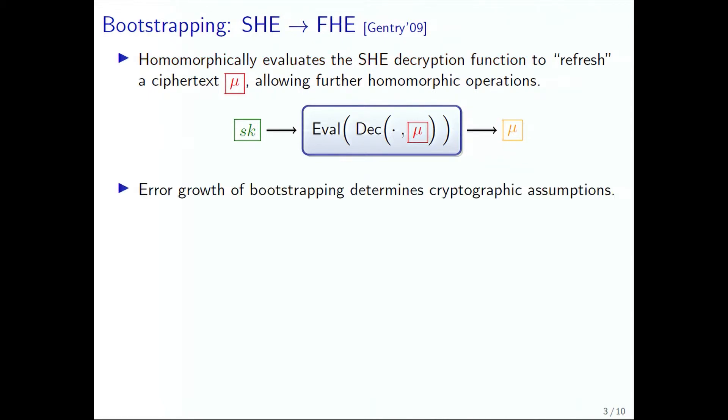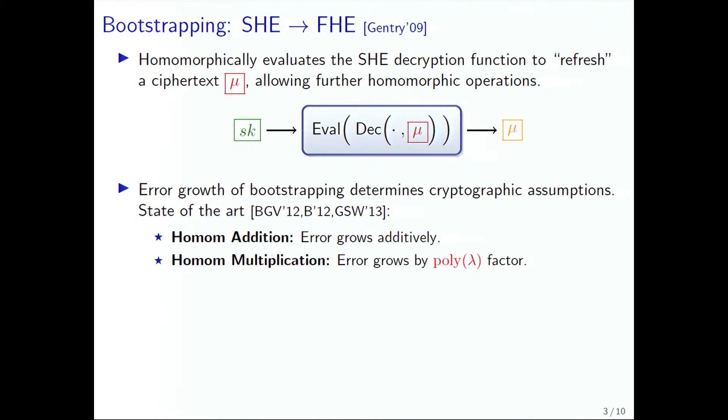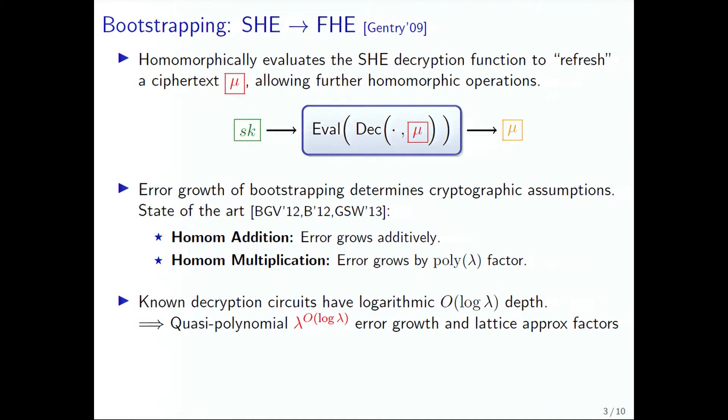The rate of error growth in bootstrapping determines the underlying cryptographic assumptions. In the best-known works by Brakerski, Gentry, and Vaikuntanathan, and by Gentry, Sahai, and Waters from last Crypto, for homomorphic addition, the error grows in an additive manner, but for homomorphic multiplication, the error grows by a factor polynomial in the security parameter lambda. So can we do better?